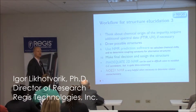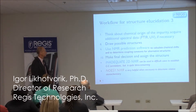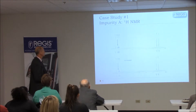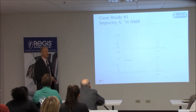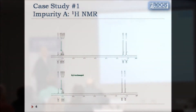We have several examples where we use this flow to assign the structure and we can follow up and see how it was done. This is an impurity which was present in the final API, and surprisingly it was carried forward from the first step.